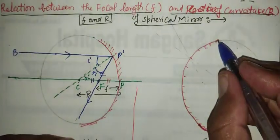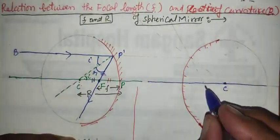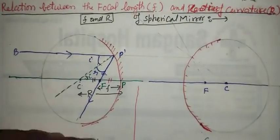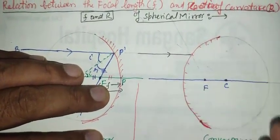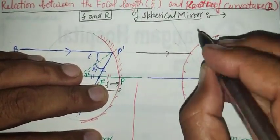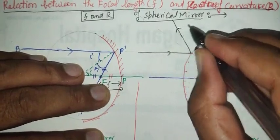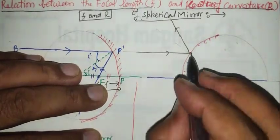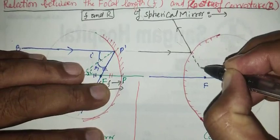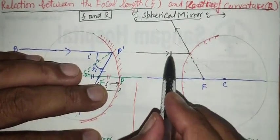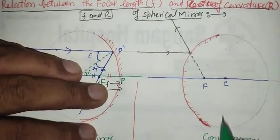Now we will set up the same relation for the convex mirror. This is the convex mirror with its principal axis. Let this be the center of curvature and this point the focus. A parallel beam of light is allowed to fall on the convex mirror. Since a convex mirror has a scattering property, after reflection the rays scatter away from the principal axis. If one proceeds back along the reflected light, it seems to come from the focal point. The normal is drawn here from the center of curvature.